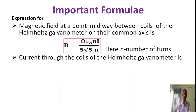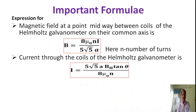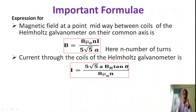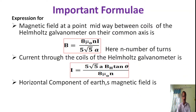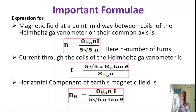The current through the coils of the Helmholtz Galvanometer is given by i = 5√5 a B_H tan θ divided by 8 mu_0 n. Here a and n have their usual meaning, B_H is the horizontal component of Earth's magnetic field, and θ is the deflection produced in the Helmholtz Galvanometer. We can also rewrite the horizontal component of Earth's magnetic field as B_H = 8 mu_0 ni divided by 5√5 a tan θ.